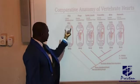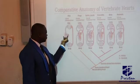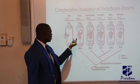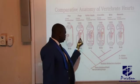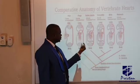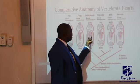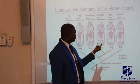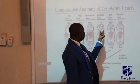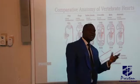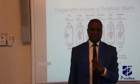Evolution of the heart in vertebrates: in fishes, we have two chambers in their heart. In frogs, we have three. In reptiles, we have three, but with many auxiliaries. Then in birds, in crocodile, and in mammals, we have four chambers.